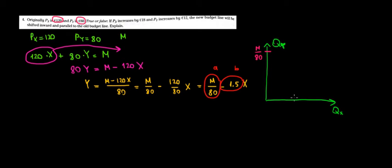Now the slope is 1.5. So I'm not going to go super exact, but 1.5 is a relatively steep slope. And let's say it would be something like that. That's the slope minus 1.5. That's the opportunity cost between X and Y. Okay, we got that.